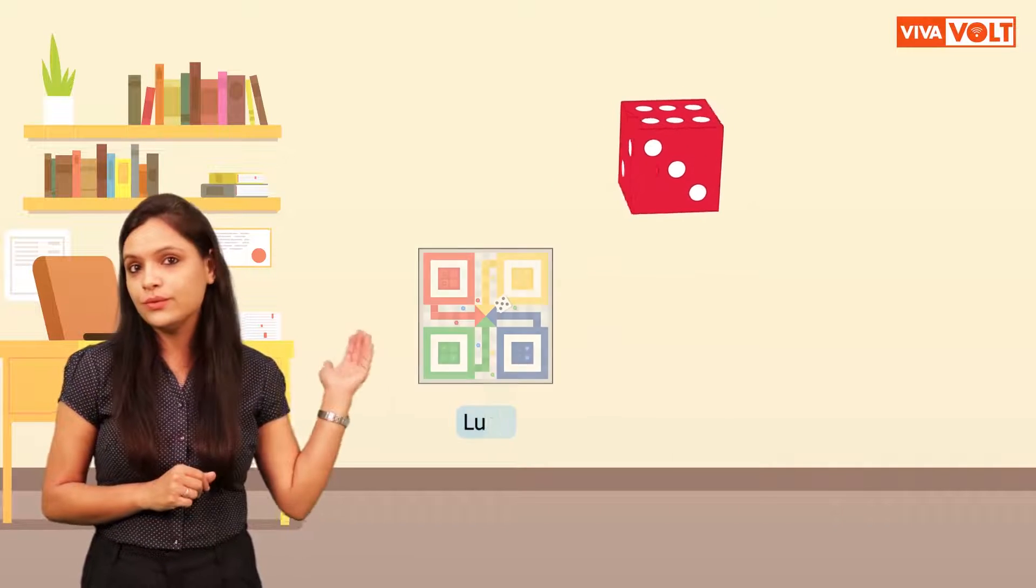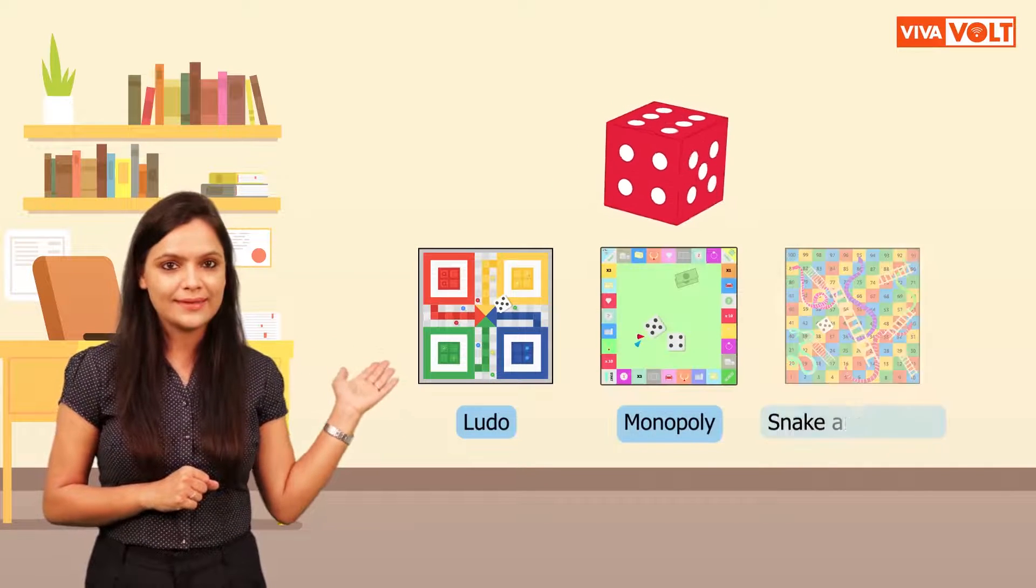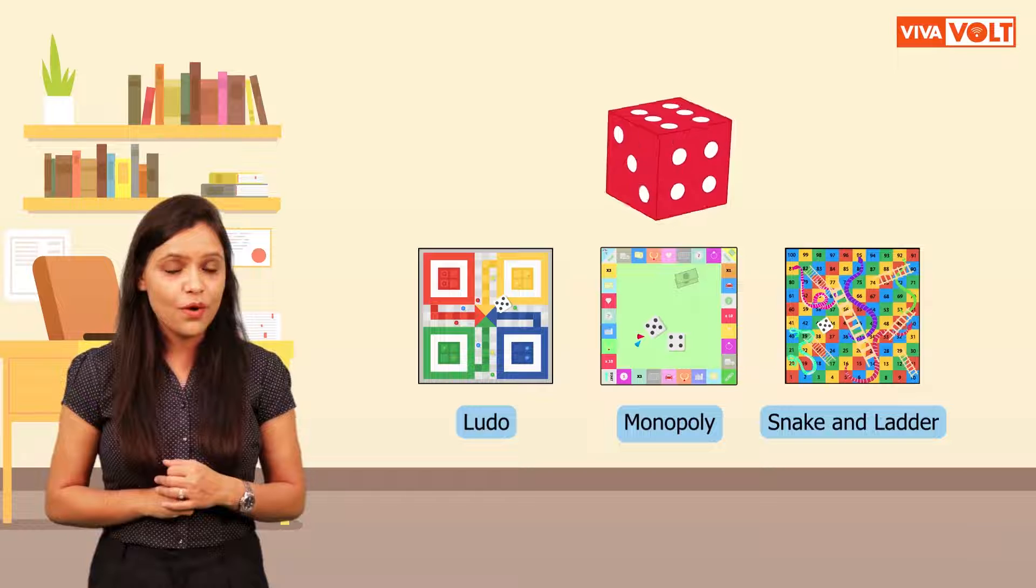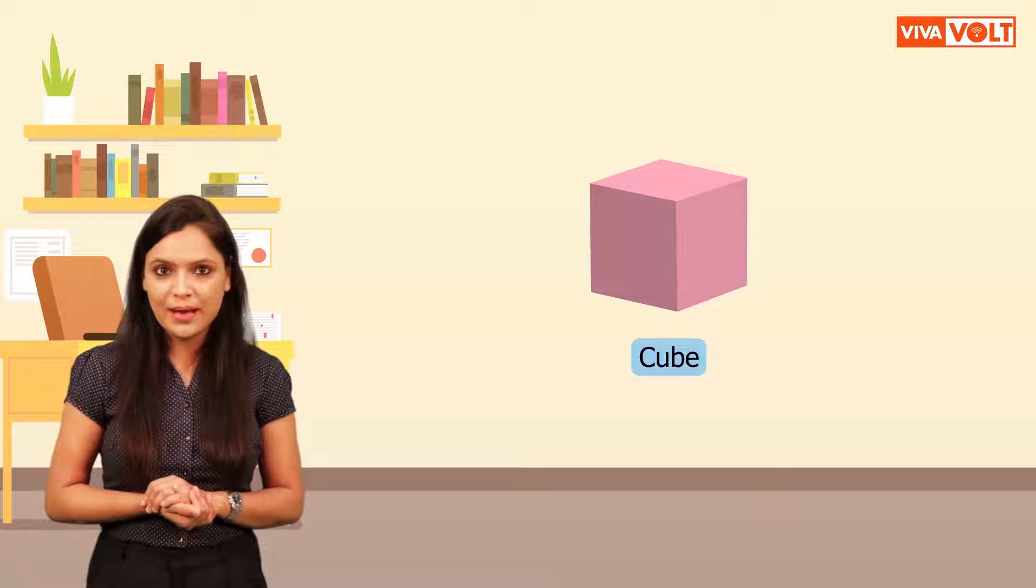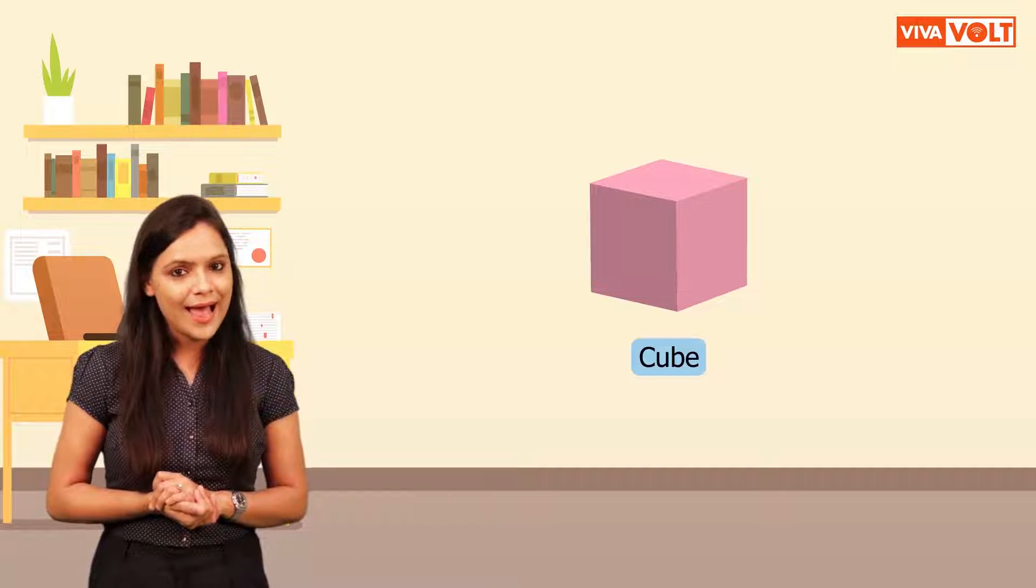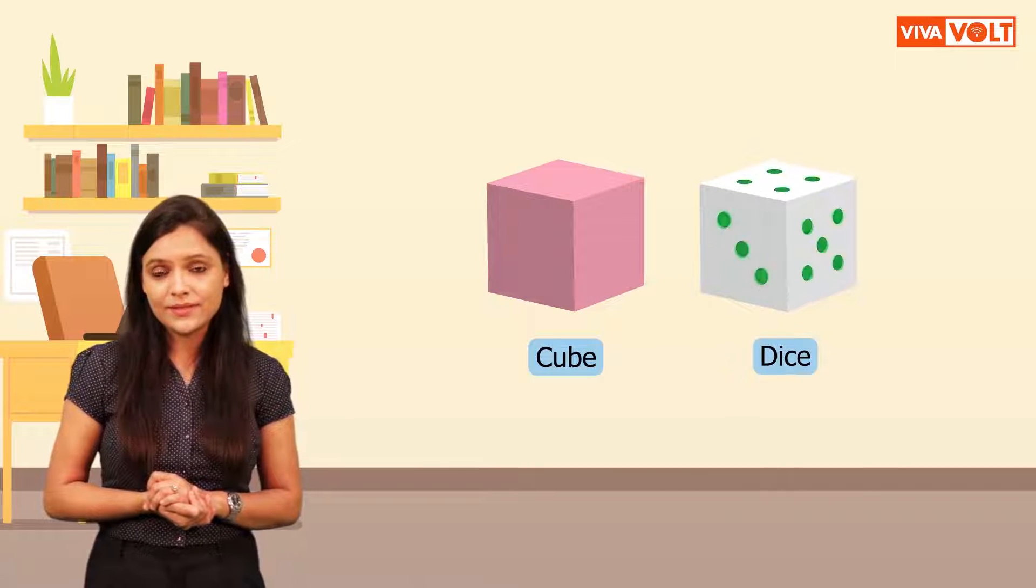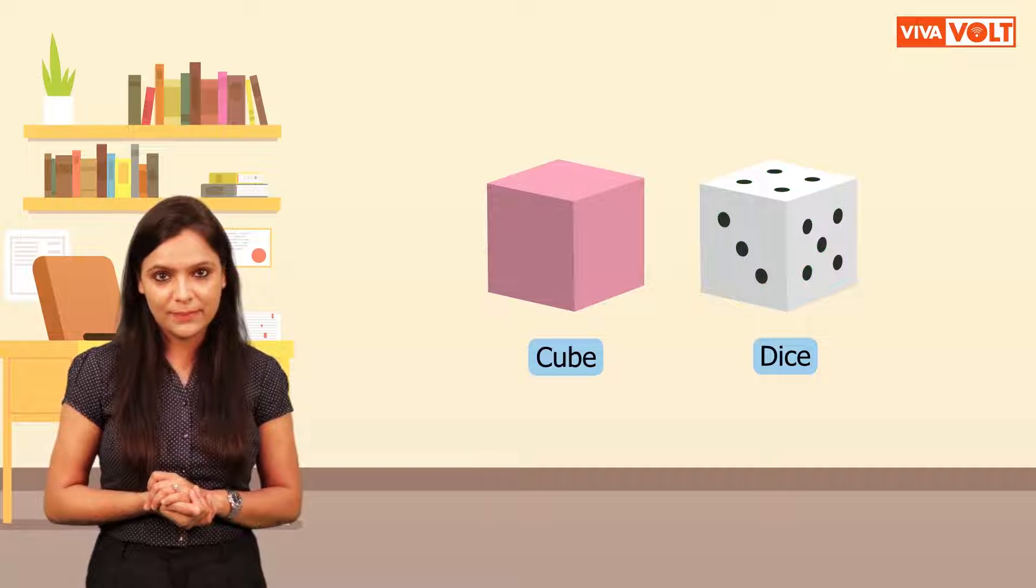It can remind you of some board games like Ludo, Monopoly and Snake and Ladder that involve its use. Let's identify this object. It is a cube when it has no numbers on its surfaces and it is a dice when its surfaces are represented by different numbers.